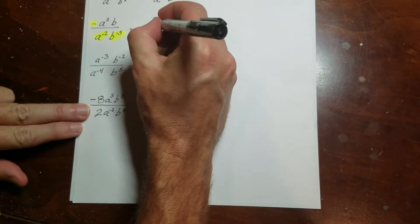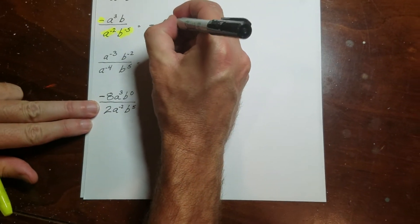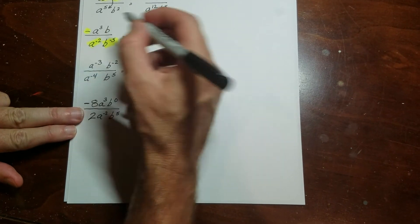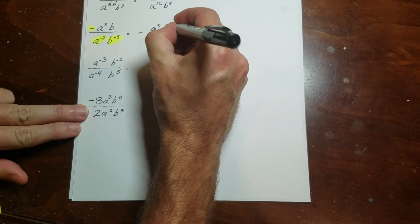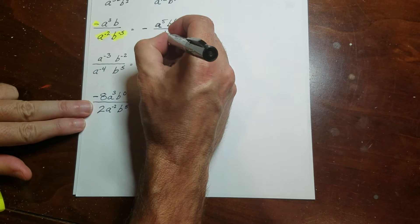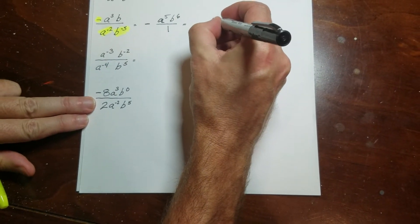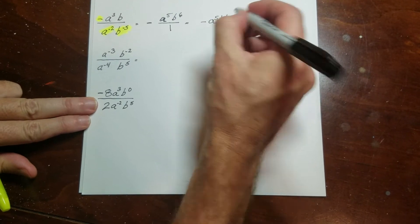So I'm going to go ahead and take this and move it up here. So that means I have to the 5th, and then this 5 comes up here to join that one. So this would be b to the 6th. Now, since there's nothing down here, you could put a 1, but that's really silly. You just put minus a to the 5th, b to the 6th.